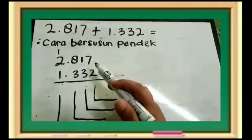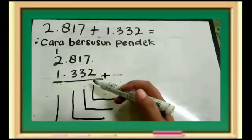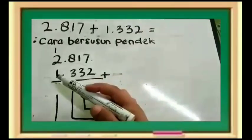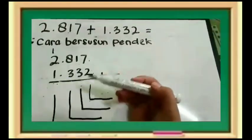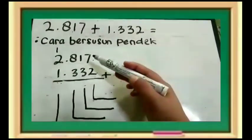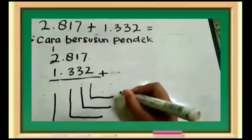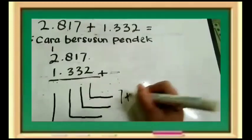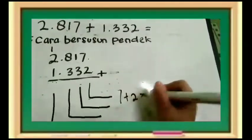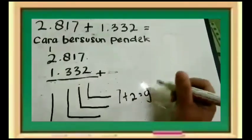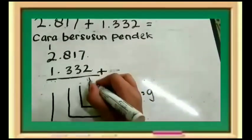Perhatikan Bu Guru. Kita terlebih dahulu berhitung dari mulai satuan, kemudian puluhan, ratusan, dan terakhir ribuan. Kita mulai dulu dari angka 7 ditambah 2. 7 ditambah 2 sama dengan berapa? Sembilan.